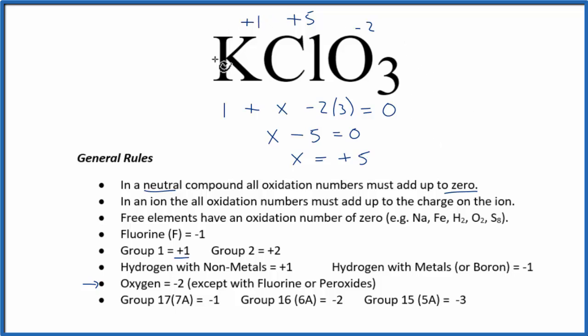So to recap, we found the oxidation numbers of the elements we knew, and we used those to find the last one there, the chlorine. This is Dr. B with the oxidation numbers for potassium chlorate, and thanks for watching.